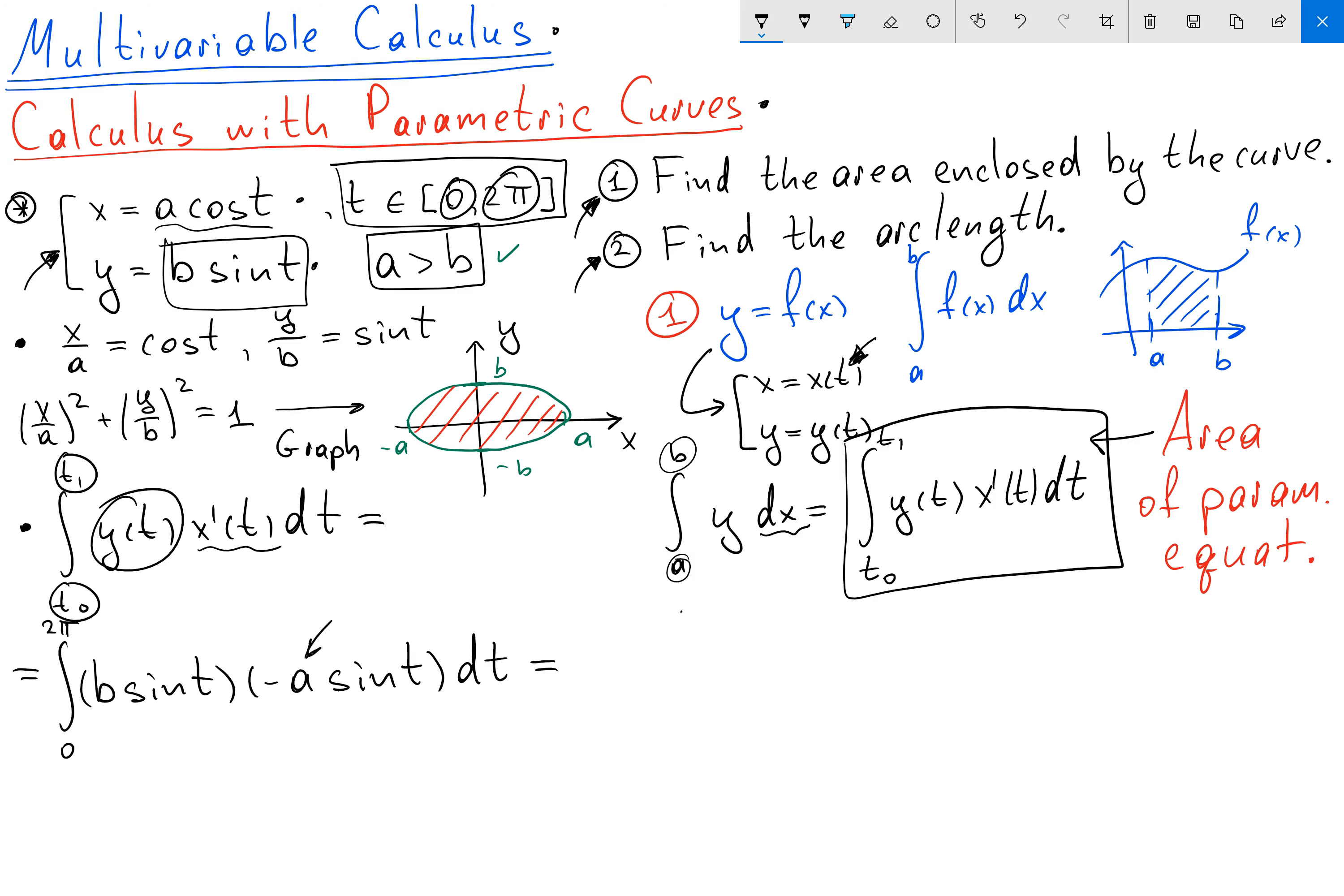Here a and b are constants. So I'm going to factor them. So we have minus ab. And inside I have the integral from 0 to 2π of sin squared t dt. And I want to evaluate this integral. And I need to remember the formula for sin squared t. I can rewrite this formula by using trigonometric identity that sin squared t equals 1 minus cos 2t over 2.